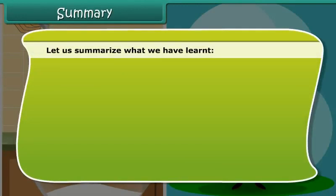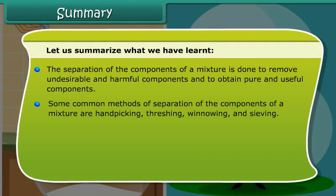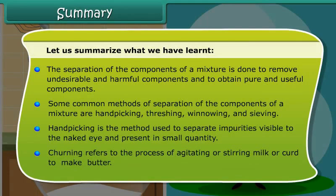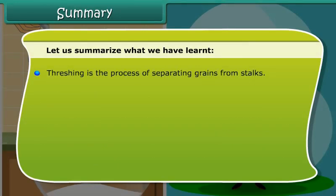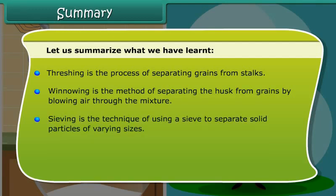Let us summarize what we have learnt. The separation of the components of a mixture is done to remove undesirable and harmful components and to obtain pure and useful components. Some common methods of separation of the components of a mixture are hand-picking, threshing, winnowing and sieving. Hand-picking is the method used to separate impurities visible to the naked eye and present in small quantity. Churning refers to the process of agitating or stirring milk or curd to make butter. Threshing is the process of separating grains from stalks. Winnowing is the method of separating the husk from grains by allowing air through the mixture. Sieving is the technique of using a sieve to separate solid particles of varying sizes.